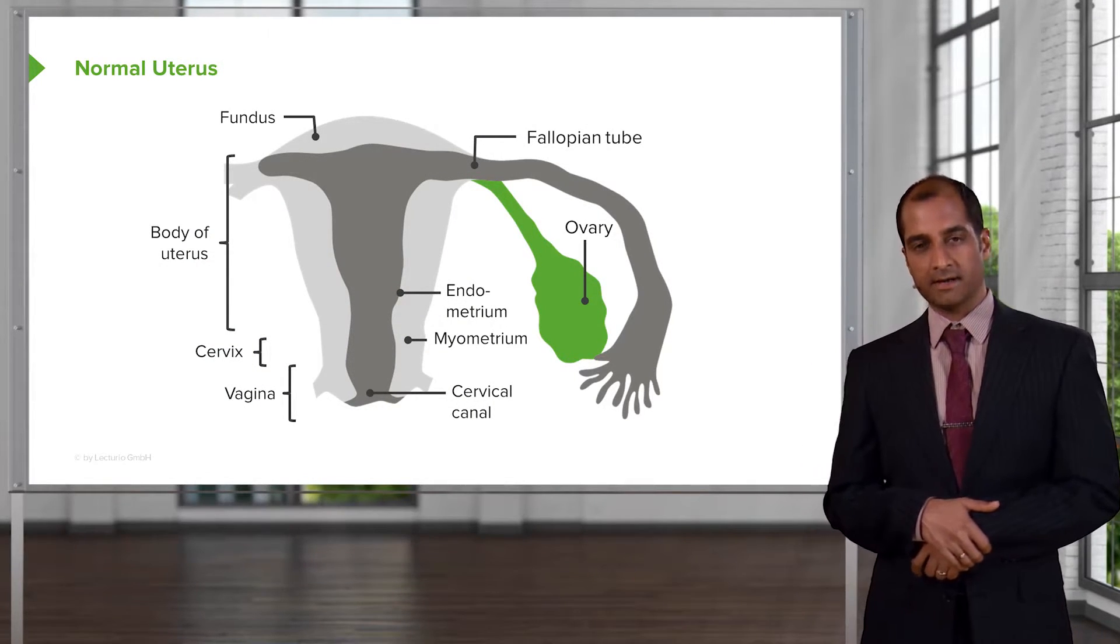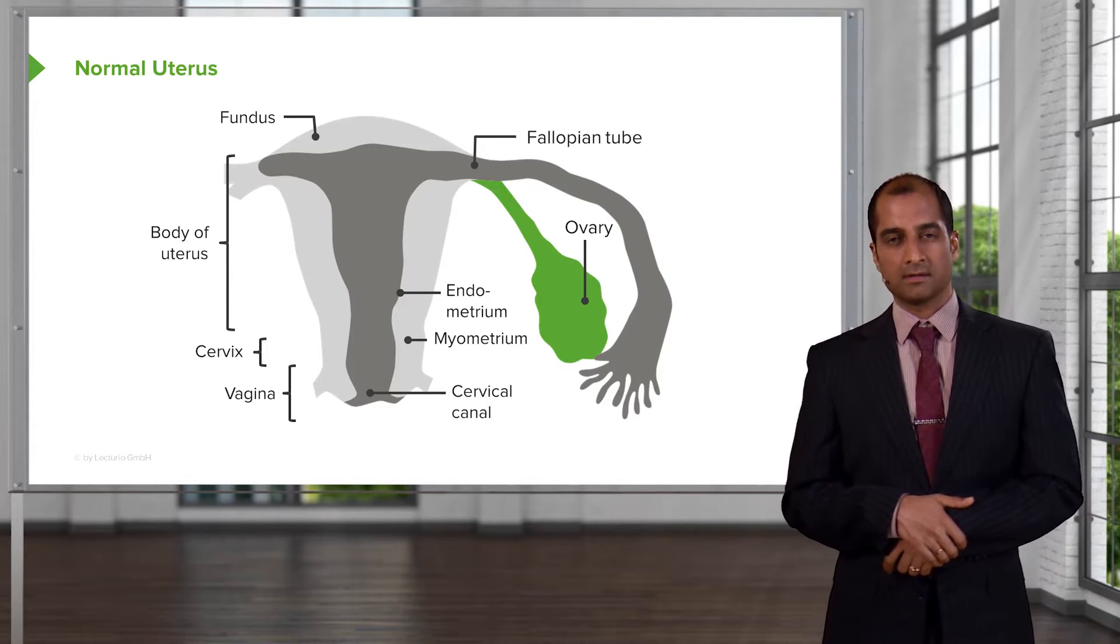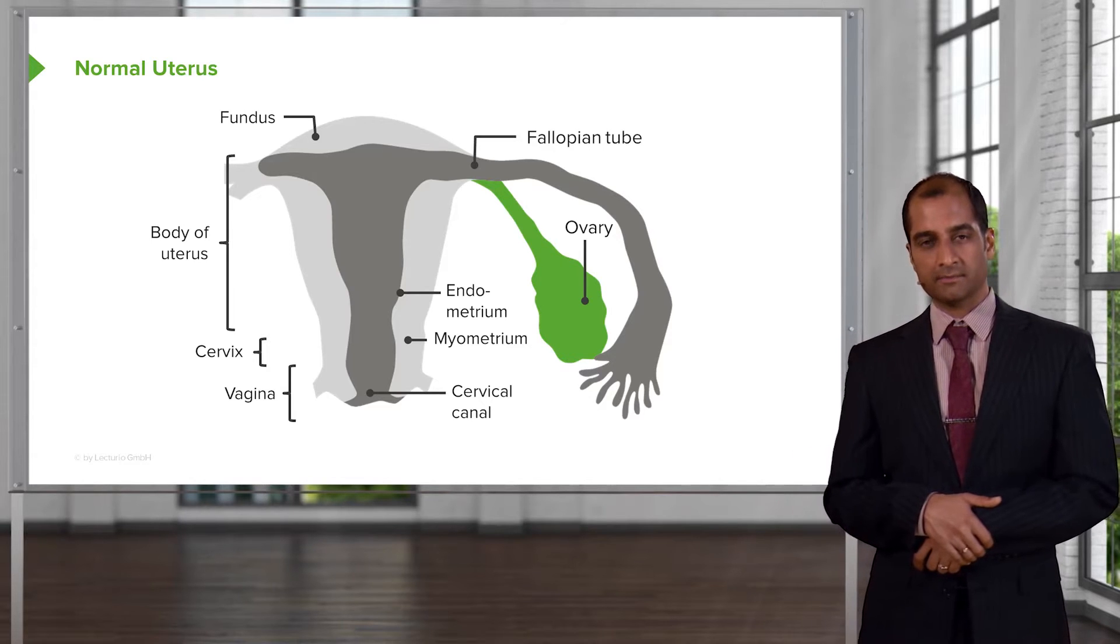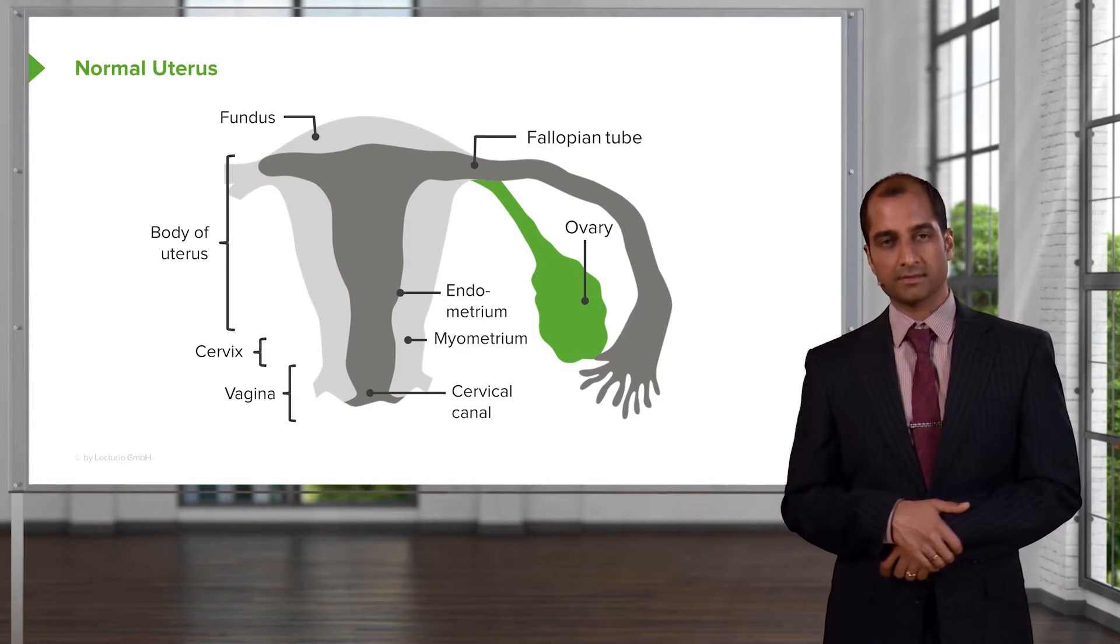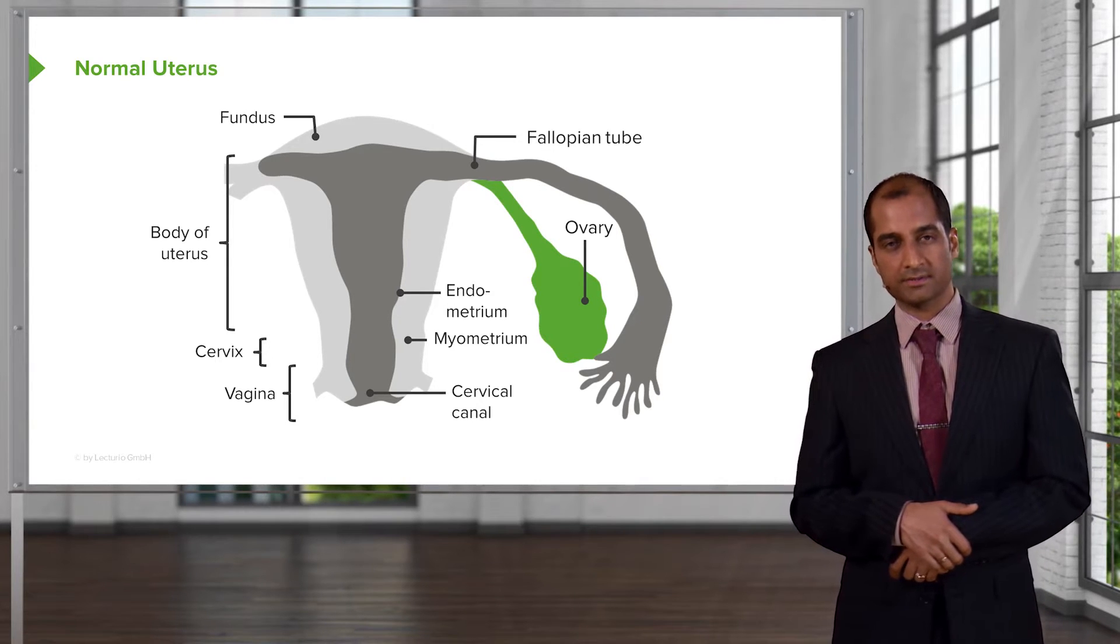Down at the bottom, we have completed our discussion of the vulva and its relevant pathologies. We then moved into the vagina and looked at certain disorders, including vaginal canal pathologies and cancers.